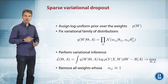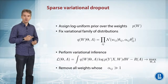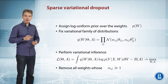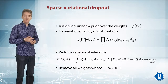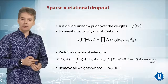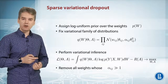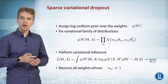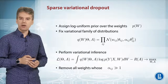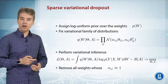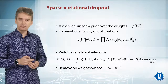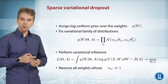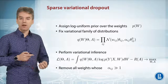The whole procedure, known as sparse variational dropout, works as follows. First, we assign a log-uniform prior distribution over the weights — a fully factorized prior. Then we fix a variational family of distributions q parameterized by θ, which is a fully factorized distribution over all weights with mean θ and variance αθ². Finally, we perform stochastic variational inference, optimizing our ELBO with respect to both θ and all αs. At the end, we remove all weights whose α exceeded some predefined large threshold.